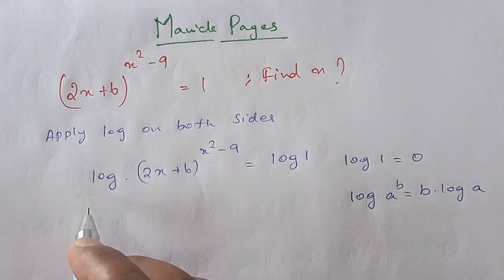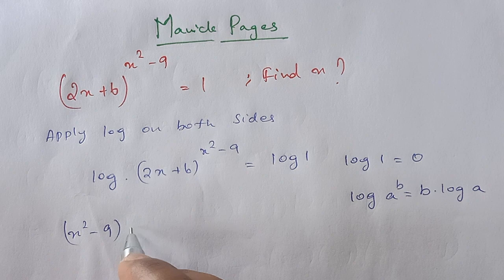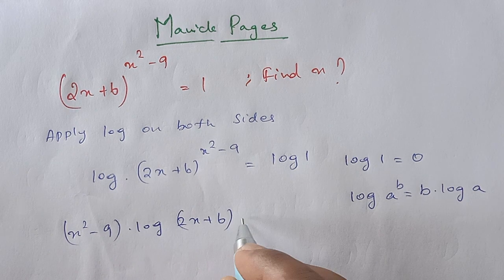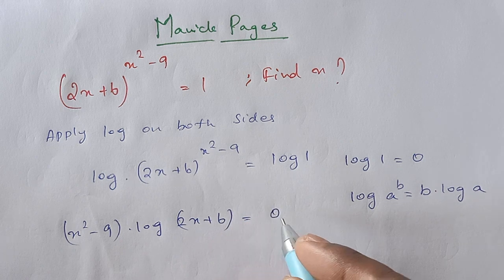Now apply this property here: x squared minus 9, into log (2x plus 6), which is equal to log 1, which is 0.